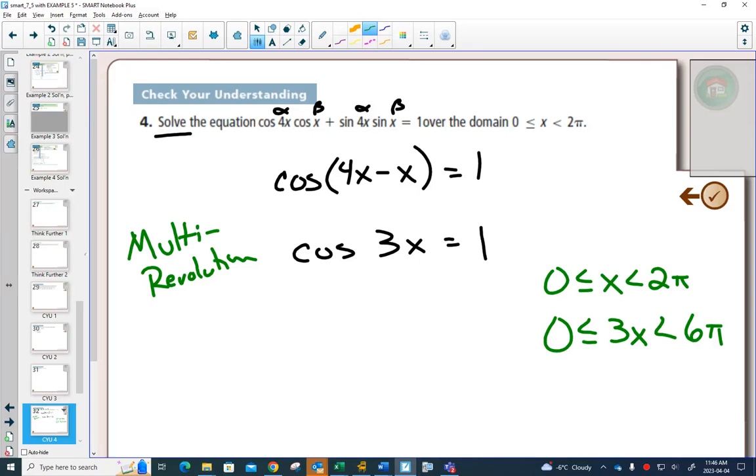Next, step two, is we solve for 3x. This question says cos 3x equals 1. Is cos ever equal to 1 on your unit circle? Yes, it's your x-coordinate right here at 0.